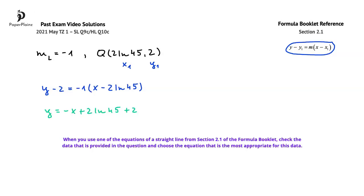Here, for instance, we chose the third equation, because in the question we are given the gradient of the line and the coordinates of a point that lies on the line.